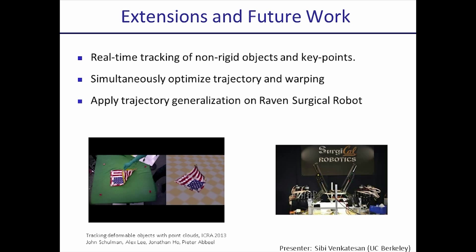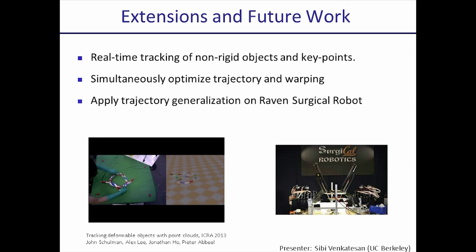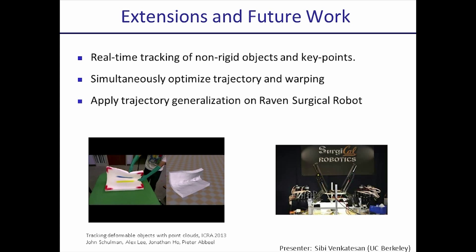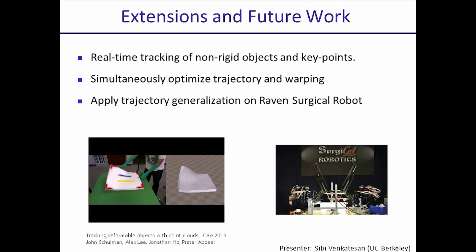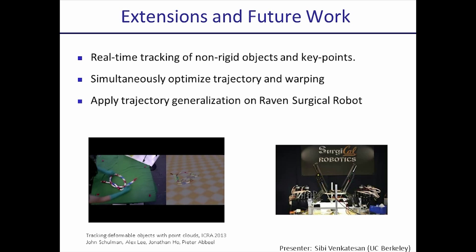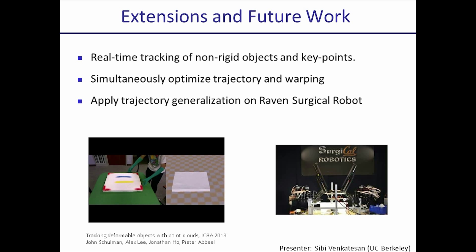We'll talk about a few extensions that could potentially improve our algorithm. First, we want to use real-time tracking to track both the non-rigid tissue and key points in the scene across different segments. Second, we could potentially jointly optimize for warping and trajectory — for example, a warping that is close but not perfectly optimal might yield a trajectory that is much easier to execute and results in success rather than failure. Finally, we plan to implement this on a real surgical robot, where the challenges are perception at a small scale and working in a constrained and uncertain environment.